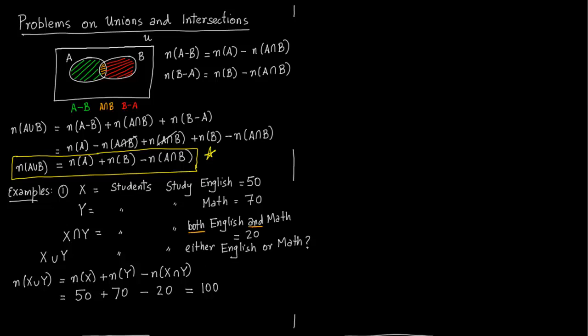That was the first example — the easiest one. You could be asked to compute either X union Y or X intersection Y. Sometimes the numbers are given for X union Y and you have to compute X intersection Y. There are four terms in the formula, so three would be given and you compute the fourth.